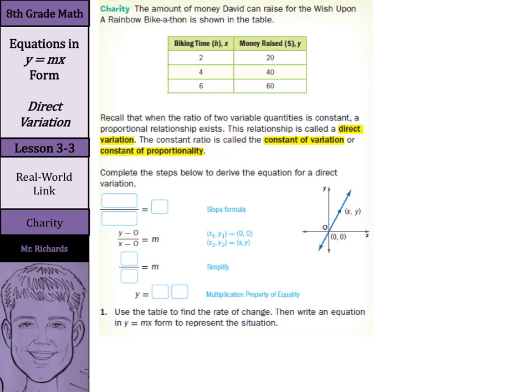Now, in our real-world link here, the amount of money David can raise for the Wish Upon a Rainbow Bike-A-thon is shown in the table, where our biking time is on the left, and the money raised is on the right.